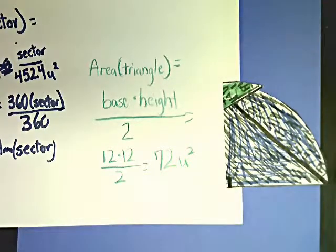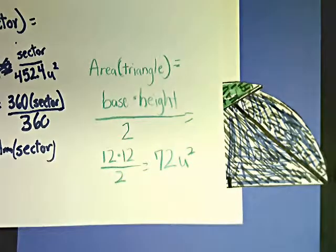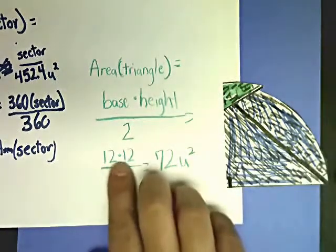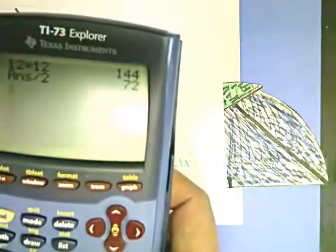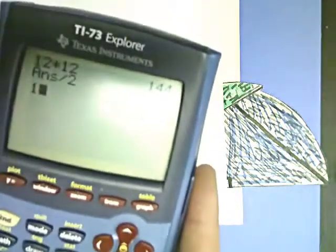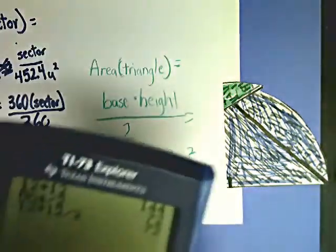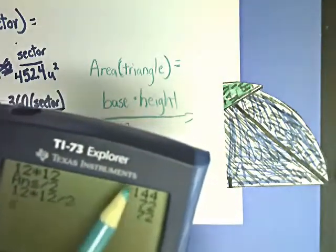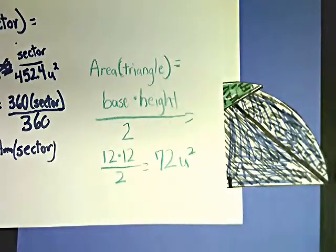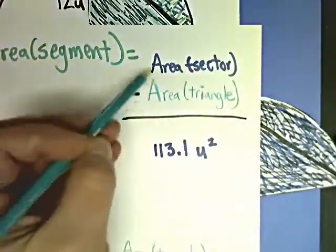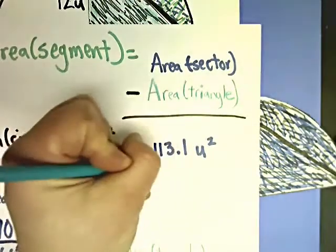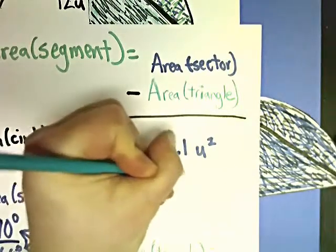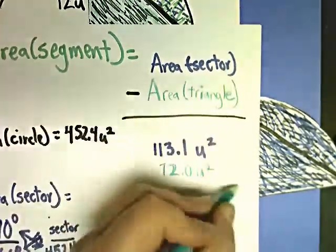The calculator can act up on the order of operations — multiply or divide. It should just go left to right, but people have had problems with anything that has a square root and a division sign. So it's best to type in 12 times 12 first and then do your dividing. That way you get the most accurate answer. Area of triangle is 72 units squared. So I'm going to put 72.0 units squared as my area of triangle.